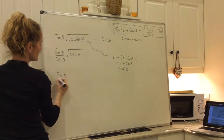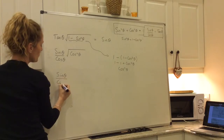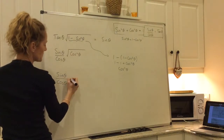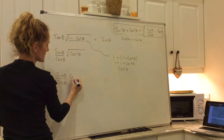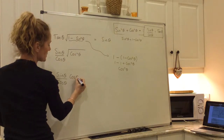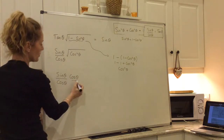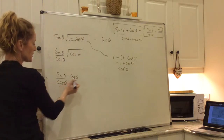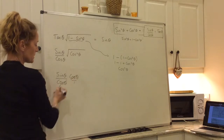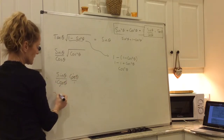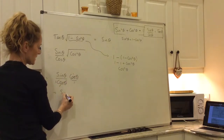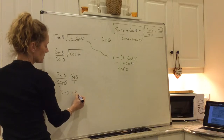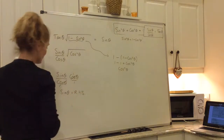So we have sine theta over cosine theta, and the square root of a number squared is just the number itself, so we get multiplied by cosine theta. You can divide the top and the bottom by cosine theta, and that leaves you with sine theta, which is equal to the right-hand side.